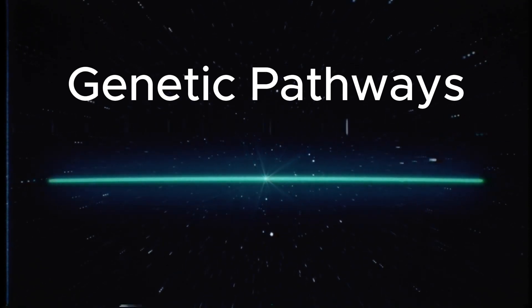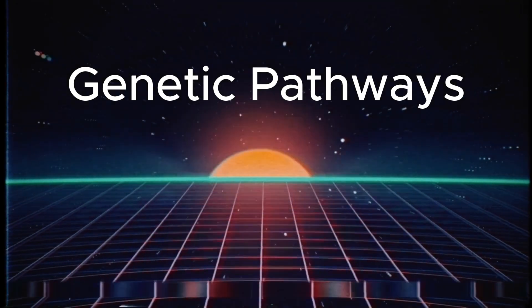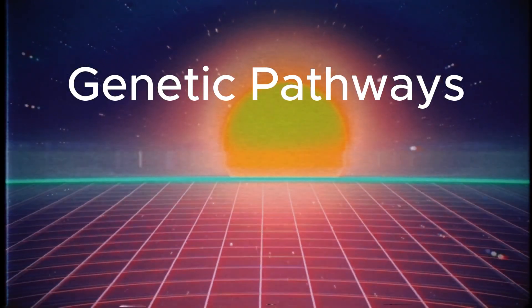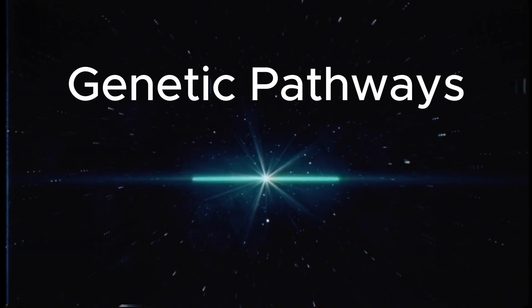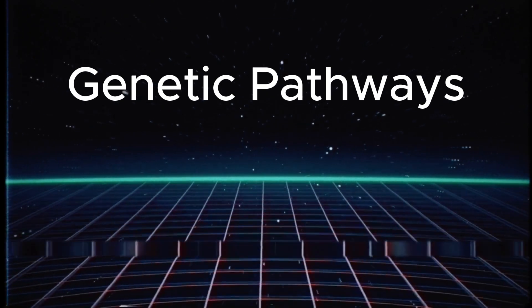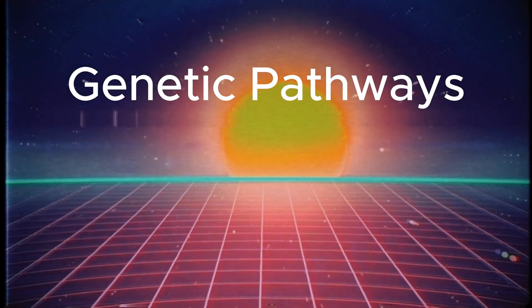This increased rate of evolutionary change allowed organisms to develop more complex and varied forms. Life evolved from simple single-celled organisms into more sophisticated multi-cellular entities. These entities eventually developed specialized structures like roots and leaves and began forming large coordinated systems—essentially early biological communities.